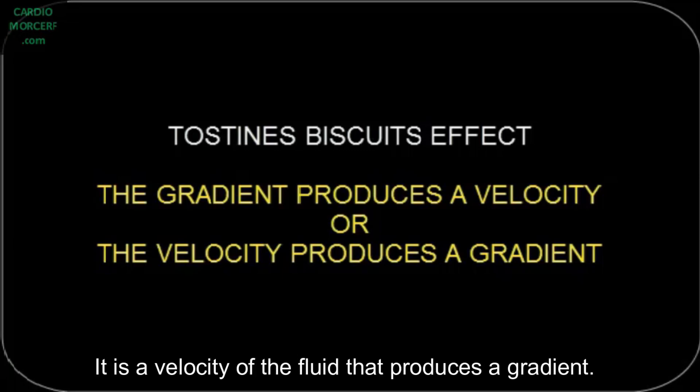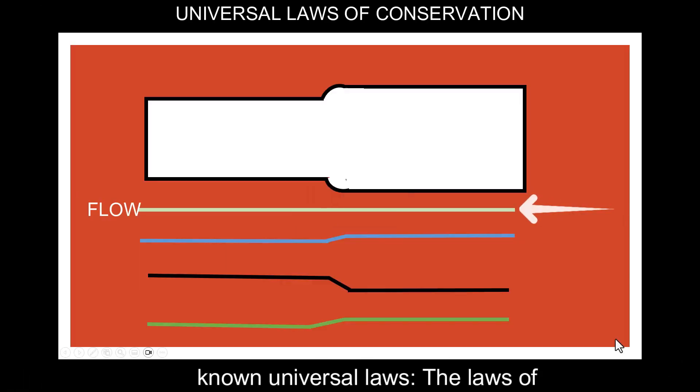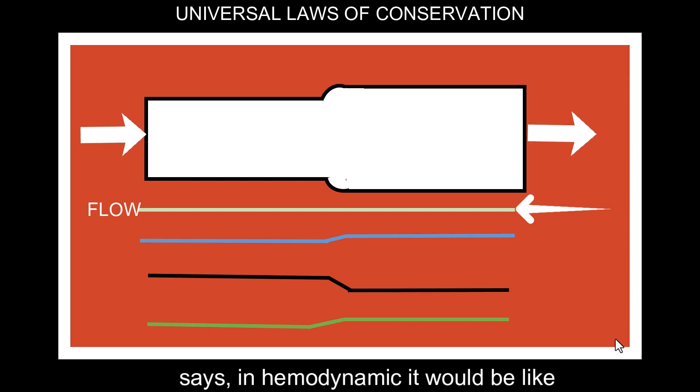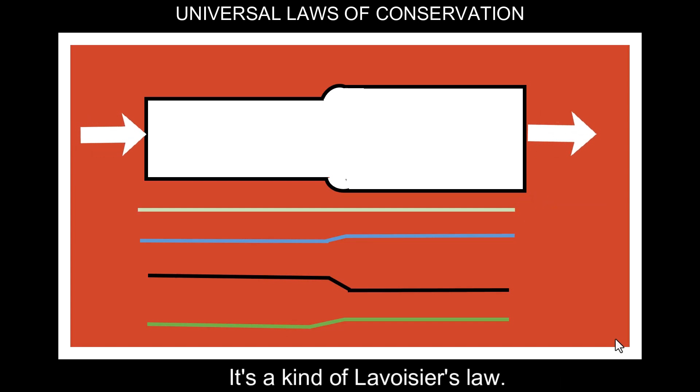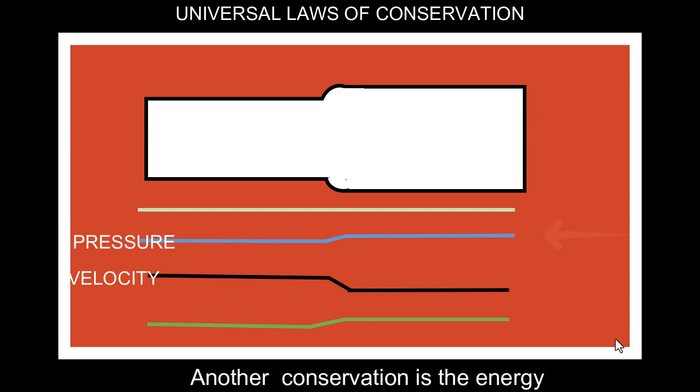You will see that here are some known universal laws, the laws of conservation. The law of mass conservation says, in hemodynamic, it would be like the volumetric flow that enters in a tube has to be the same that runs out of the tube. It's a kind of Lavoisier's law.